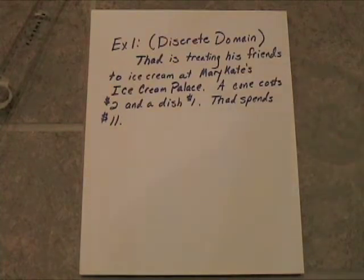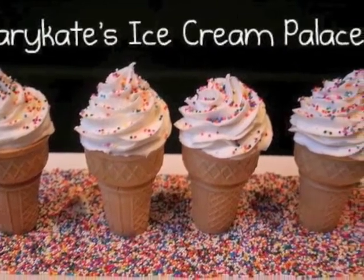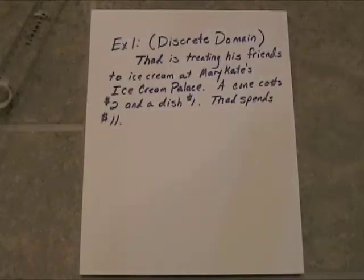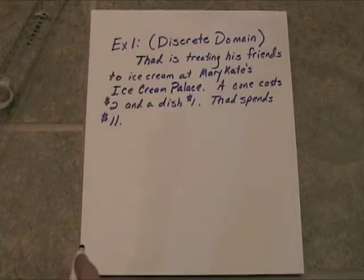Thad is treating his friends to ice cream at Mary Kate's Ice Cream Palace. A cone costs $2 and a dish is $1. Thad spends a total of $11. First of all, we want to describe this with an equation, and I purposely made this easy so that it wouldn't be too problematic.